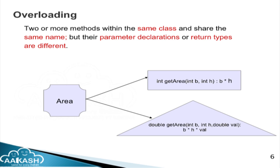Next is overloading. I can calculate area depending on different objects — for example a rectangle gives a different area than a triangle. The definition: two or more methods within the same class share the same name, but their parameter declarations or return types are different. For example, getArea for a rectangle has two parameters and return type int, while getArea for a triangle has three parameters — base, height, and value — and return type double. This concept is called overloading — one name, many forms.